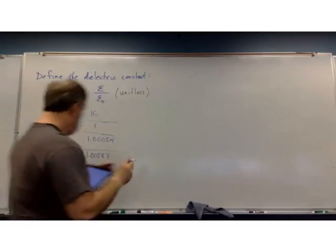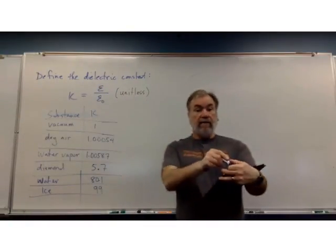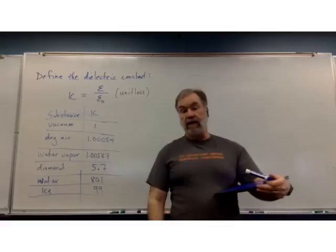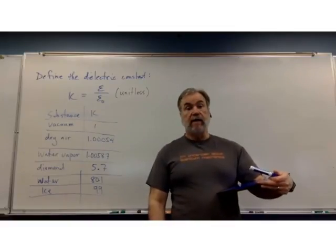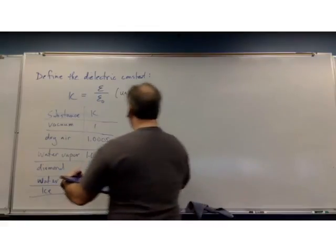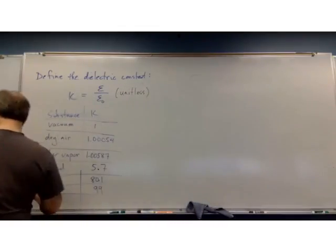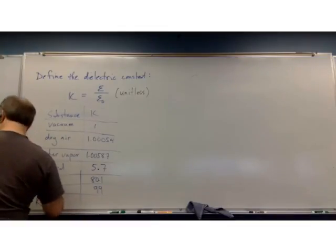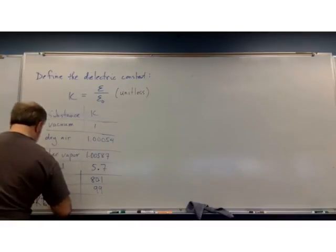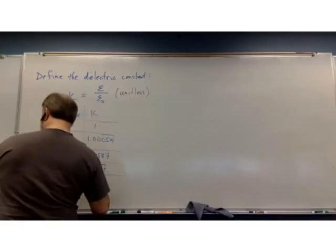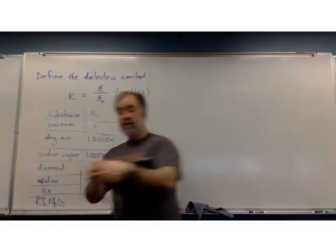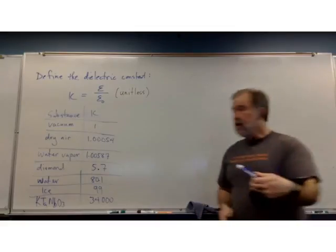And then, just for fun, I did some Googling around, and I found the dielectric constant, the largest dielectric constant I could find. And I have no idea what this substance is, but I like it anyway. And I'll put this here, I guess. And so, potassium pantalum niobium oxide. And that comes out with a dielectric constant of 34,000. That amused me.